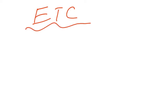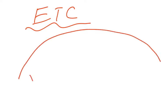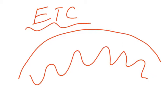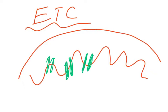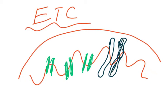Now we come to the ETC. The process takes place on the inner membrane — the inner membrane is folded — and this is where the electron transport chain occurs. There are channel proteins: three of them, and then one large channel protein which acts as an enzyme as well.